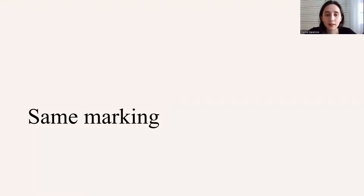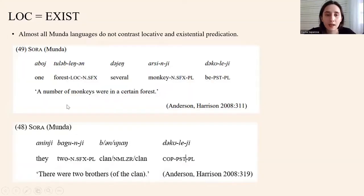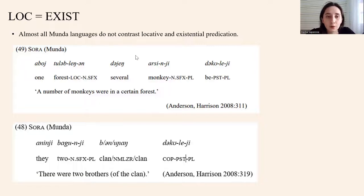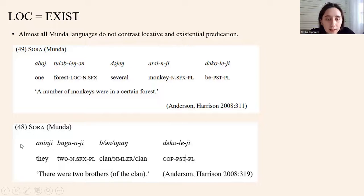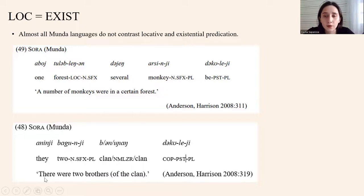Now I want to discuss the same marking. Almost all Mnong languages do not contrast locative and existential predication — they use the same devices. As in examples 49 and 48, copula 'decu' is used in locative predication and also in existential predication.